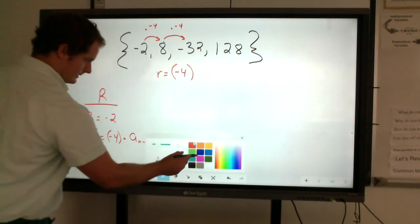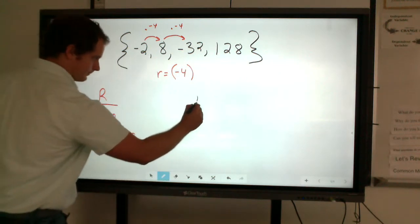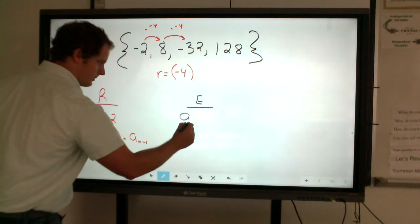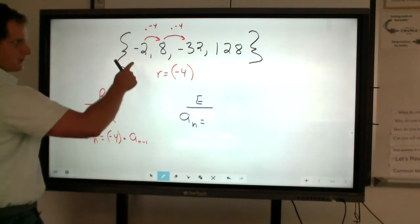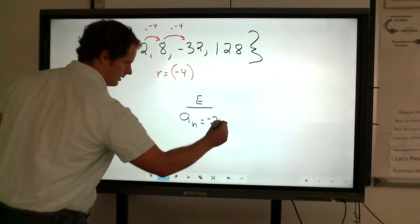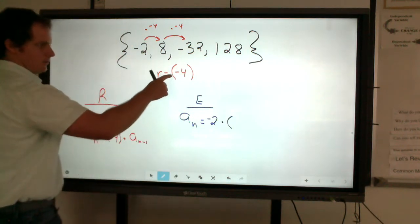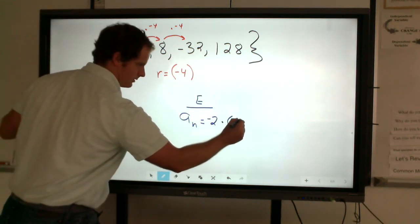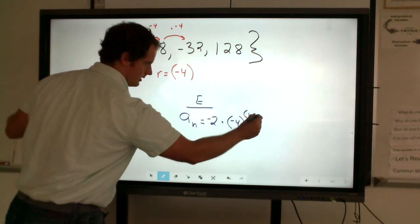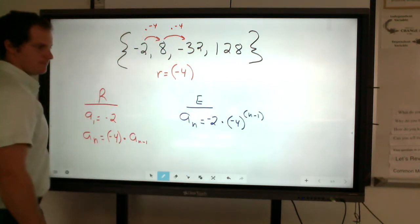If we were to do the explicit form, we have a sub n equals the first term, that negative 2, multiplied by our common ratio, which in this case is negative 4, all raised to that previous term.